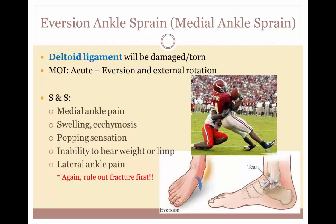An eversion ankle sprain is rare and occurs when the ankle rolls too far inward. It is often accompanied by a fracture of the fibula. An eversion ankle sprain is a tear of the deltoid ligaments on the inside of the ankle, also called a medial ankle sprain or deltoid ligament sprain. It is rare for two reasons: the fibula tends to prevent the ankle from moving far enough to sprain the inside ligaments, and the medial ligaments are stronger than the lateral ligaments. An eversion ankle sprain is therefore often associated with fracture of the lateral malleolus or the talus.